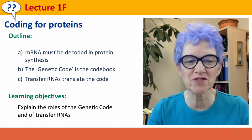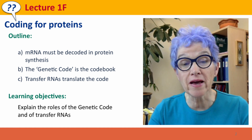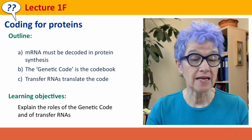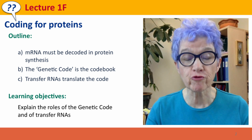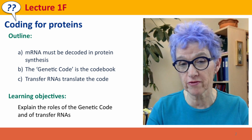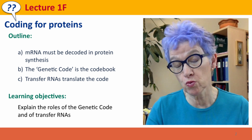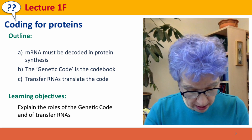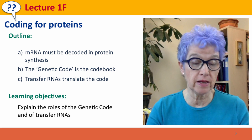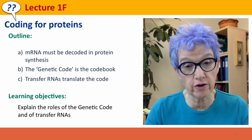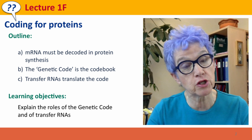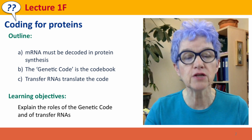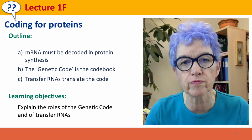Hi everyone. Welcome back to Useful Genetics. This is Lecture 1F, where we're going to be talking about how the information in DNA is used to code for proteins. Coding is very much the right word for what happens. We'll talk about how messenger RNA must be decoded to a different language in protein synthesis, from the language of the bases, the nucleotide subunits of DNA, into the language of amino acids, the subunits of protein.